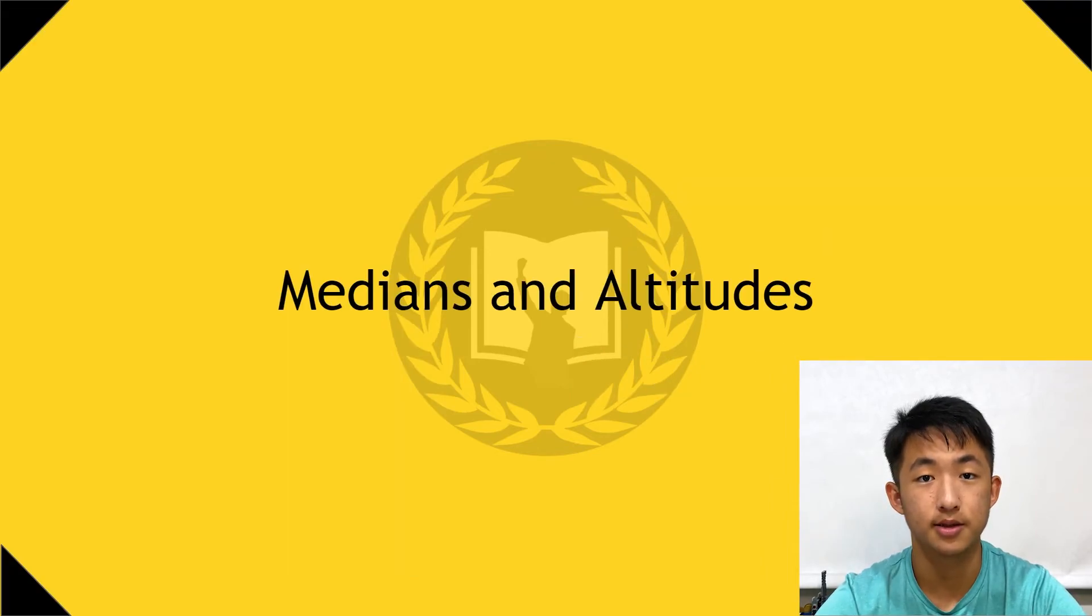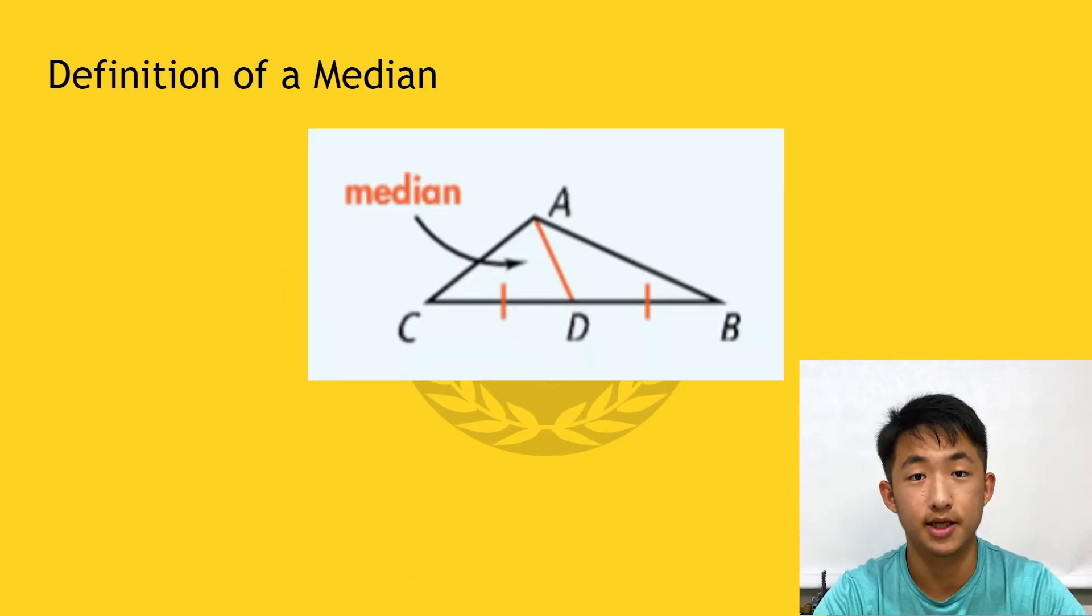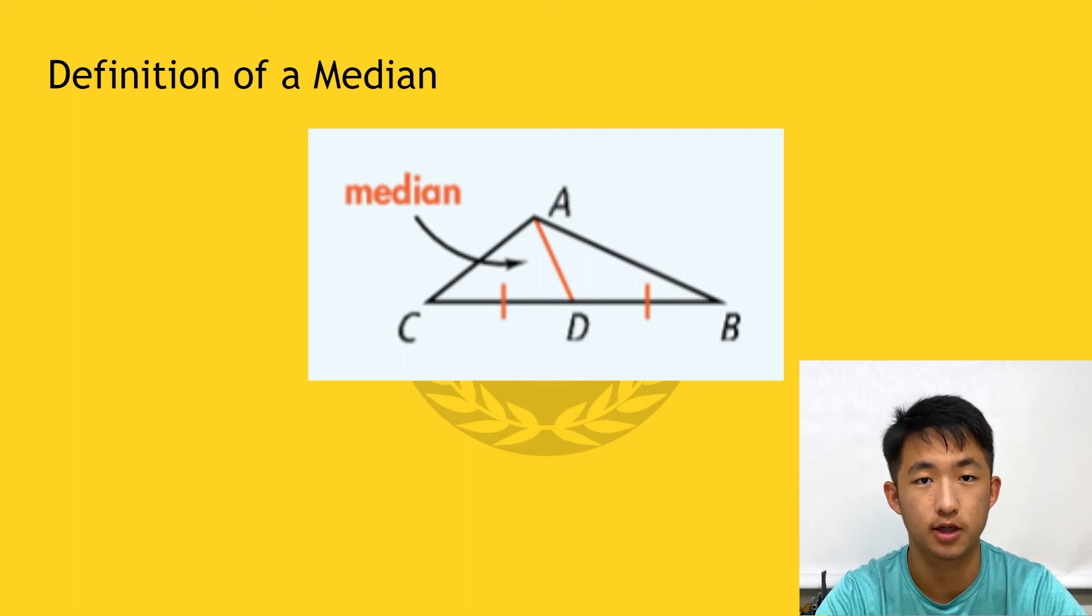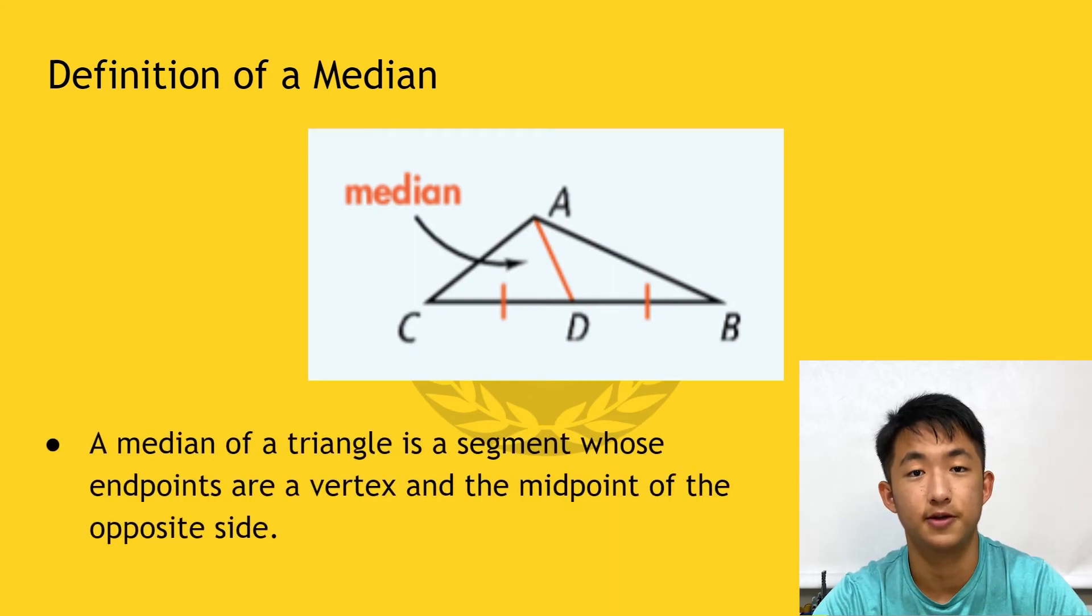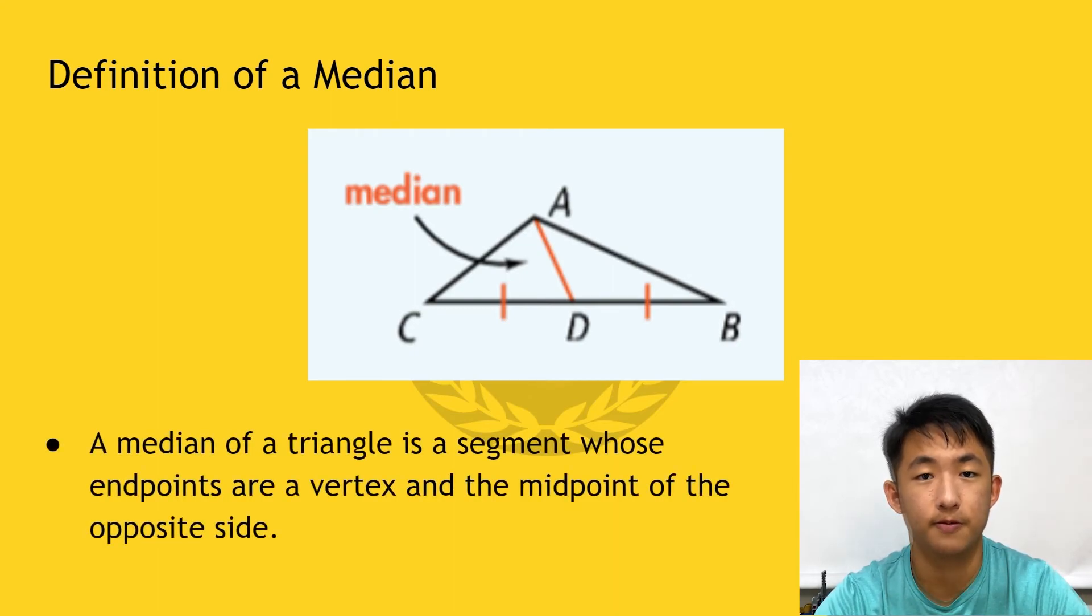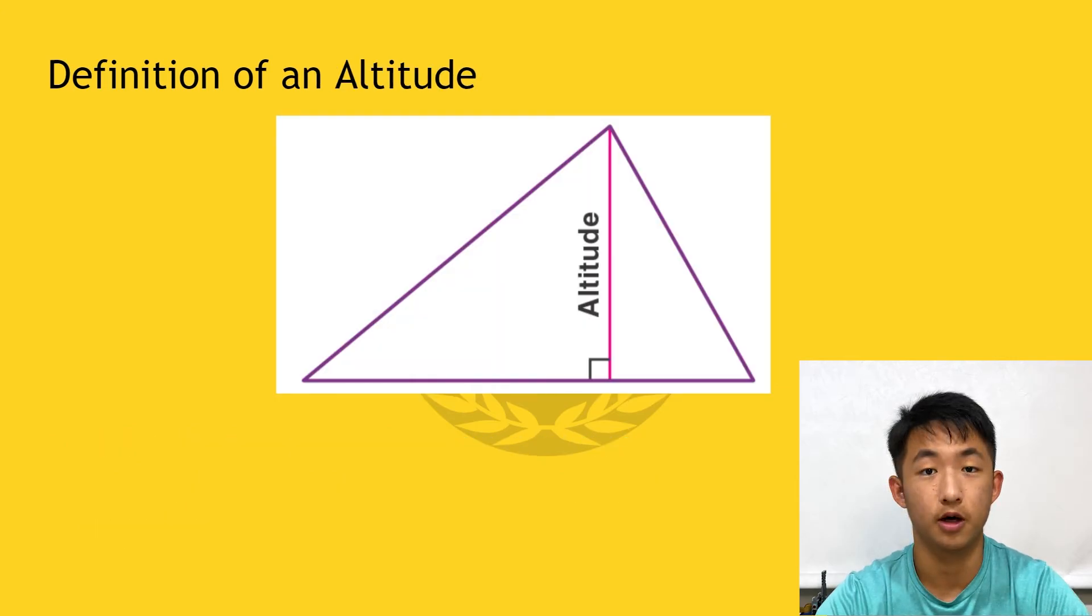All right, now let's learn about medians and altitudes. A median is a segment in a triangle whose endpoints are a random vertex and the midpoint of the opposite side of that vertex. If that sounds kind of confusing, please refer to the diagram above. Again, remember that there are three medians in a triangle.